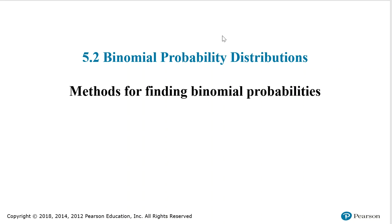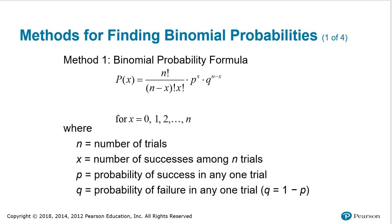Now we're going to look at methods for finding the binomial probabilities for binomial probability distributions. The first method is to use the binomial probability formula. The formula is given on the screen.